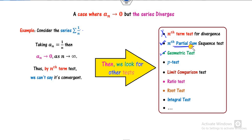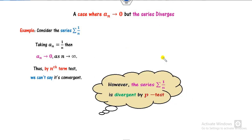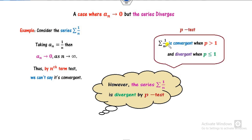Since the nth term test failed for this particular example, we check the nth partial sum sequence, and if that fails, we try further tests. I will explain in the next video how to check the nth partial sum. The nth term test is not applicable for 1/n, but the p-test is applicable. By the p-test, comparing with 1/n^p: the series is divergent when p ≤ 1 and convergent when p > 1. Here p equals 1, so it is divergent.